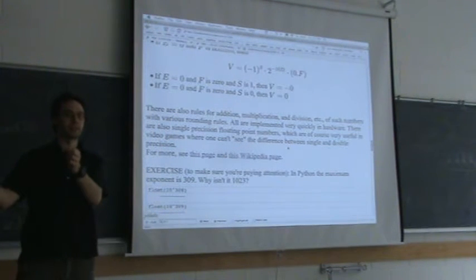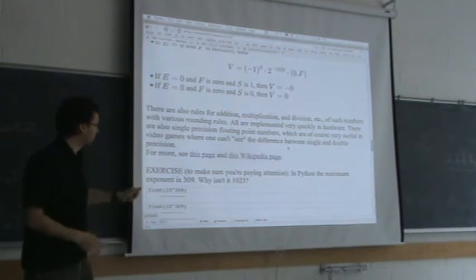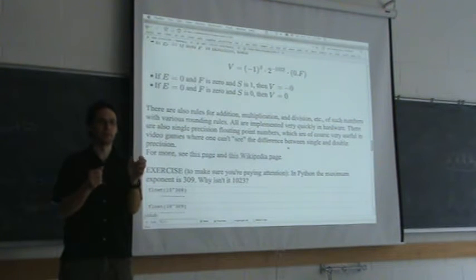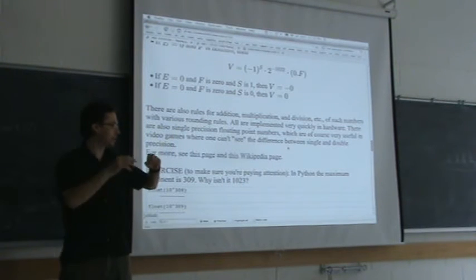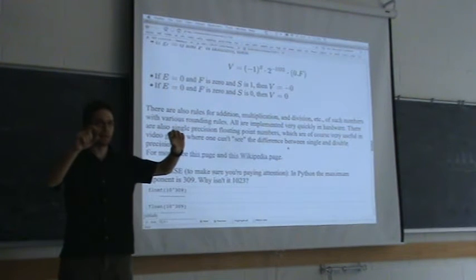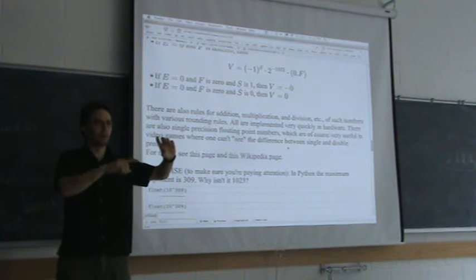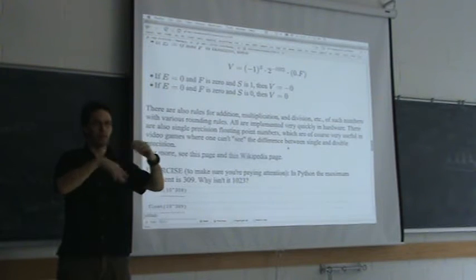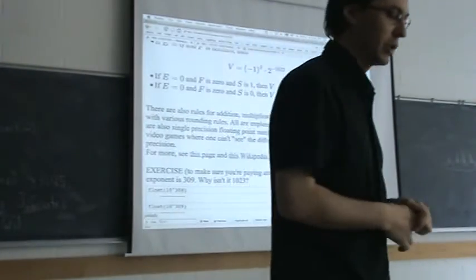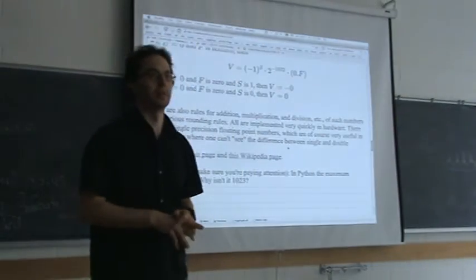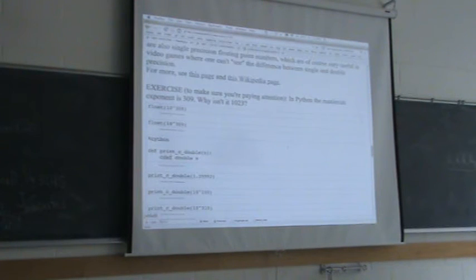But there are also rules for what happens when you add or multiply two floating point numbers — you round the result to one of these floating point numbers. There are various rules for how you do the rounding: round to the nearest one, round towards zero, round somewhat randomly depending on some property of the number, etc. There are theorems about which sort of rounding is probably the best thing to do.